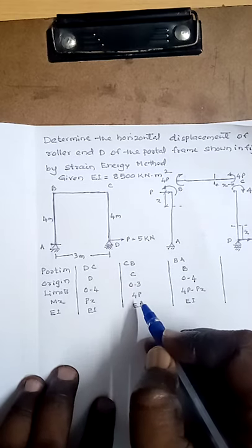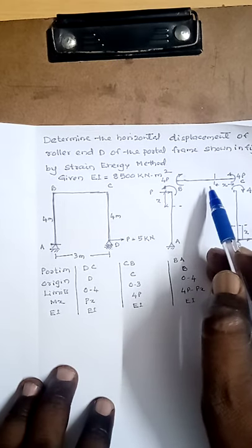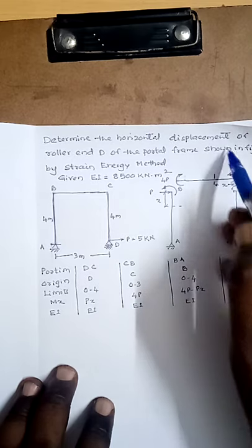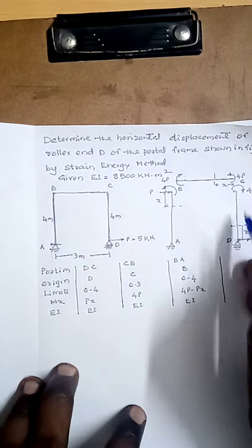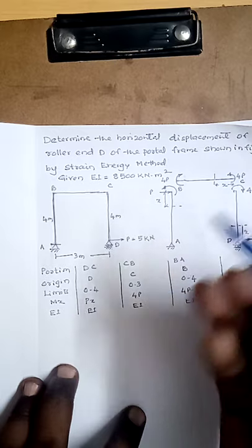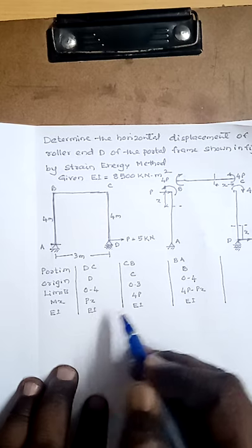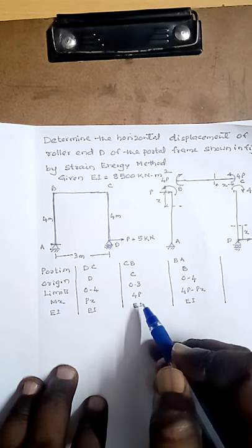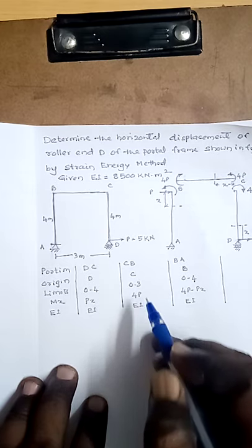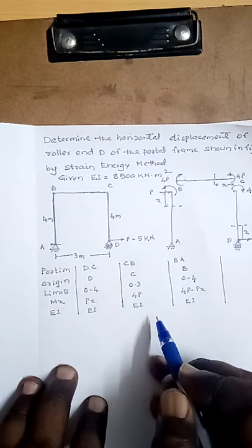In portion CB, if we consider a section line at a distance X from C, the bending moment due to the load is P×4, that is 4P, which is sagging. Considering a section at distance X, there are no other loads except the sagging bending moment 4P. Hence the bending moment is 4P. X varies from 0 to 3, so the limits are 0 to 3, and the flexural rigidity is EI.